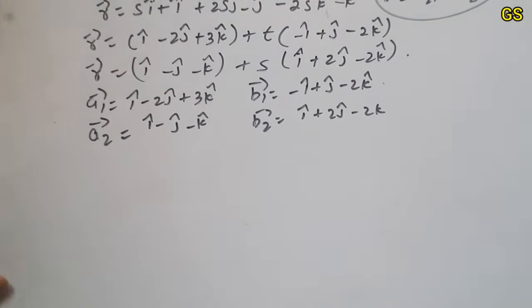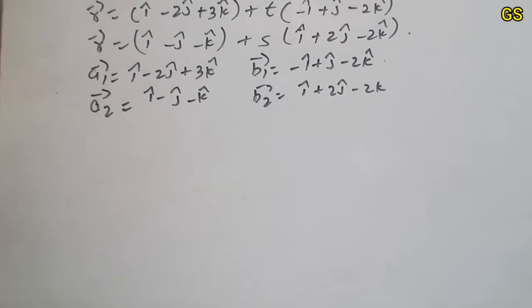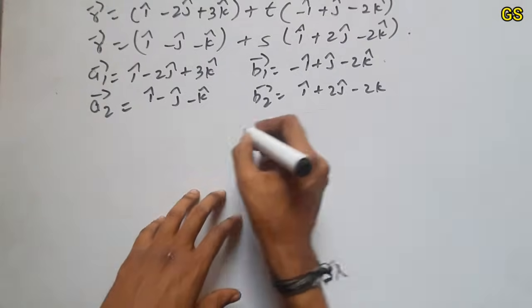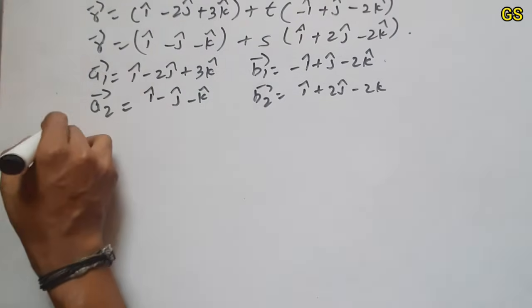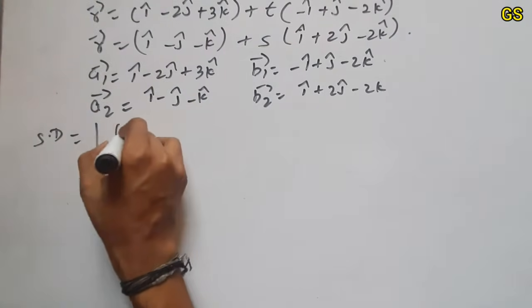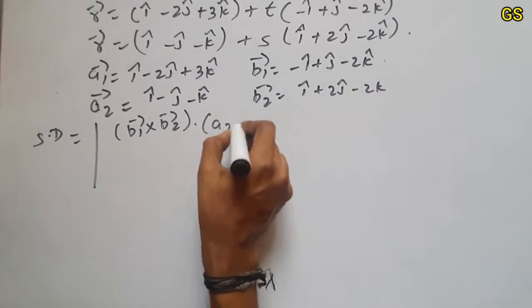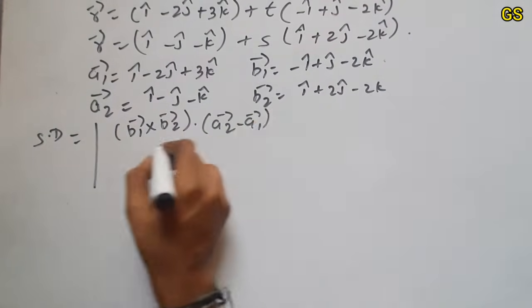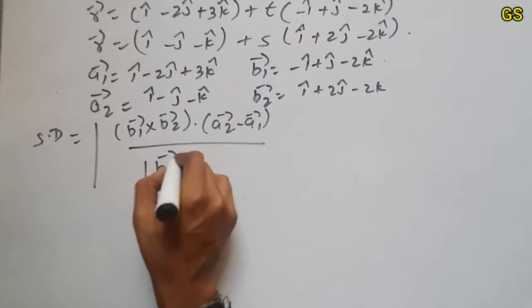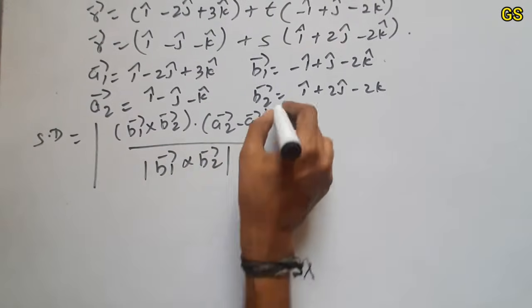So skew line formula is shortest distance equal to magnitude of b1 cross b2 dot product of a2 minus a1 by magnitude of b1 cross b2.